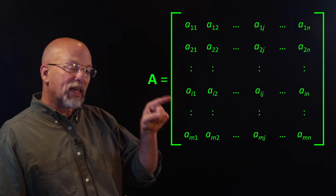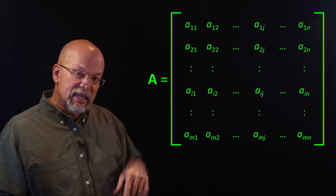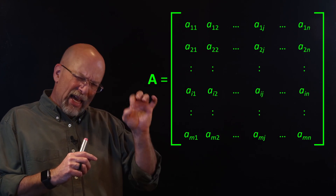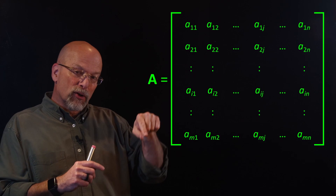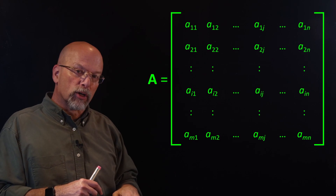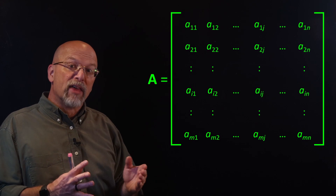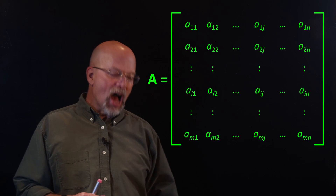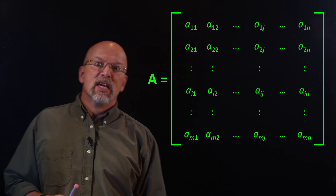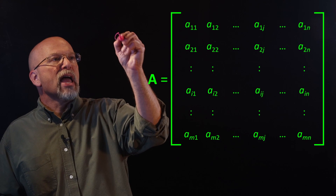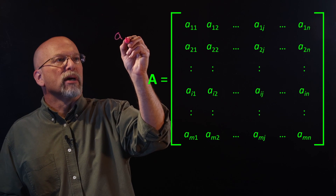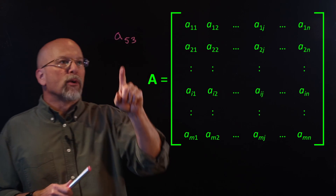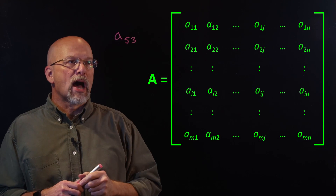If you were to pick out a specific element in this matrix, you can see that each one has two subscripts. The first subscript identifies which row you're going to find it in. The second subscript identifies which column. So something that is A sub 5, 3 would be the fifth row, the third column.